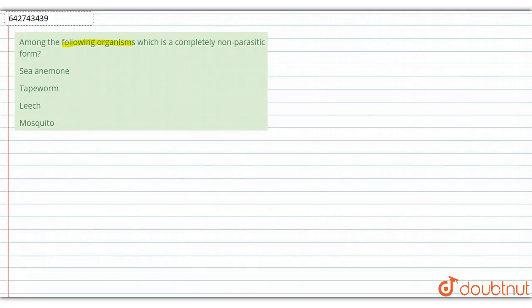Among the following organisms, which is a completely non-parasitic form? The options are sea anemone, tapeworm, leech, and mosquito.